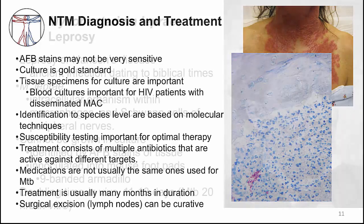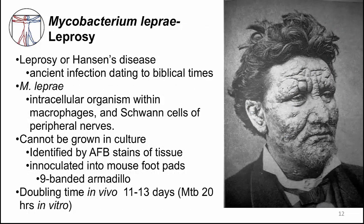M. leprae is the causative agent of leprosy, also known as Hansen's disease — an ancient infection dating to biblical times. Like MTB and other mycobacteria, M. leprae can survive in macrophages. Uniquely, it can also infect Schwann cells of peripheral nerves. It cannot be grown in culture and can only be identified by AFB stains of tissue, by molecular techniques, or by inoculation into mouse foot pads or the nine-banded armadillo. The estimated doubling time is 11 to 13 days, compared to MTB which divides every 20 hours in vitro.